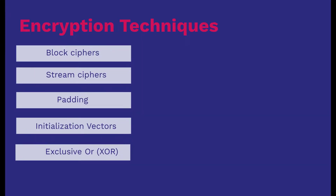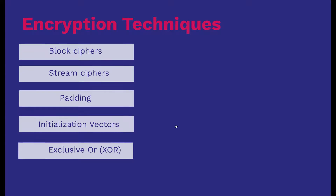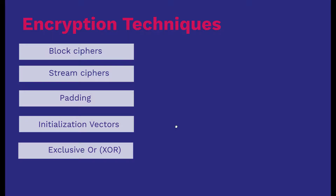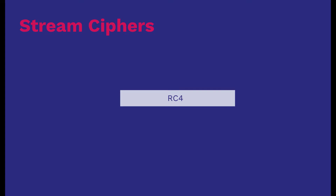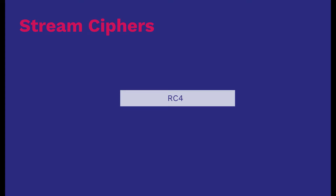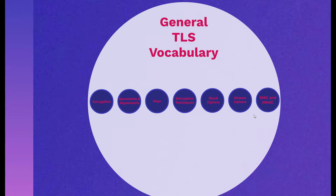Encryption techniques look intimidating, but you have to know them — things like block ciphers, stream ciphers, padding, initialization vectors, and XOR (exclusive OR). For block ciphers, you must know electronic code book (ECB), cipher block chaining (CBC), cipher feedback (CFB), output feedback (OFB), and counter mode (CTR). For stream ciphers, you really only need to know one for the CISSP exam: RC4.